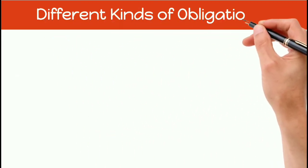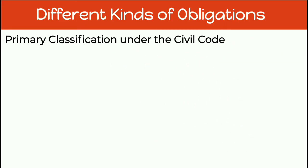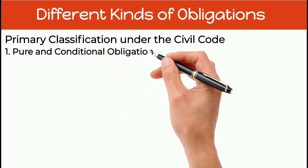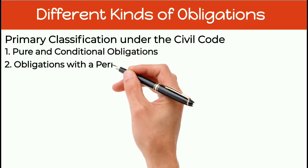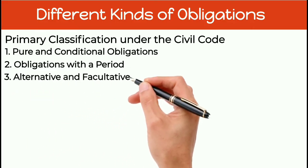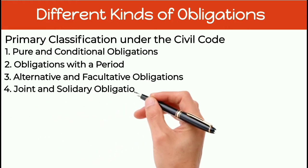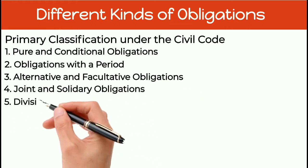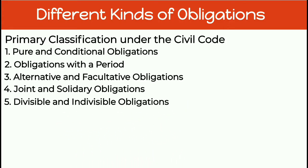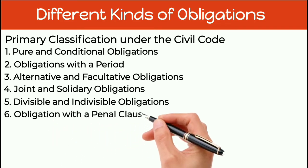There are different kinds of obligations under the Civil Code of the Philippines: first, pure and conditional obligations; second, obligations with a period; third, alternative and facultative obligations; fourth, joint and solidary obligations; fifth, divisible and indivisible obligations; and sixth, obligation with a penal clause.